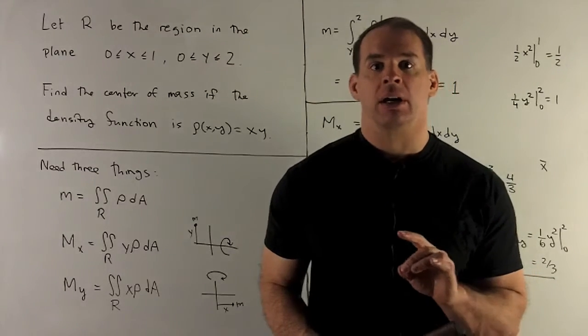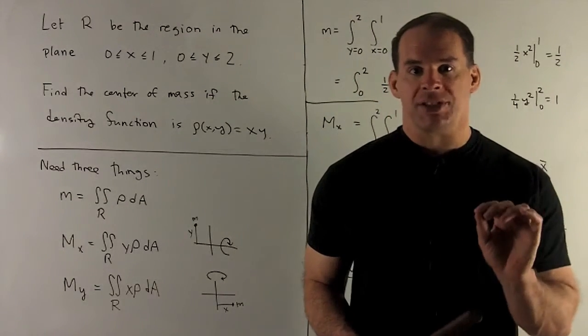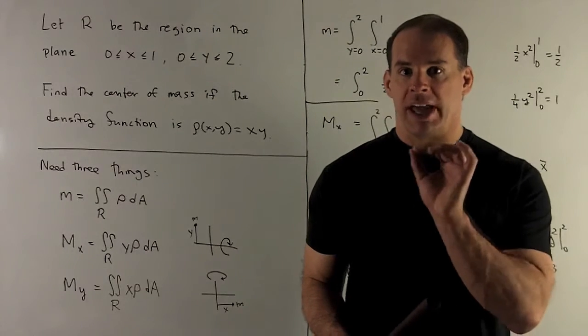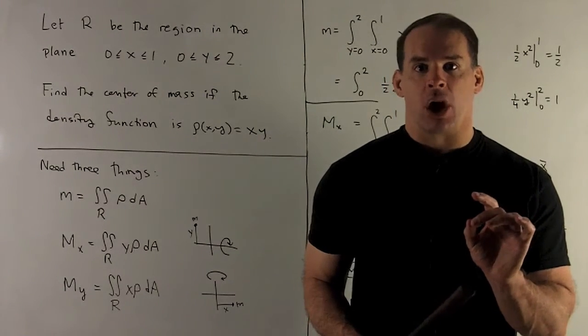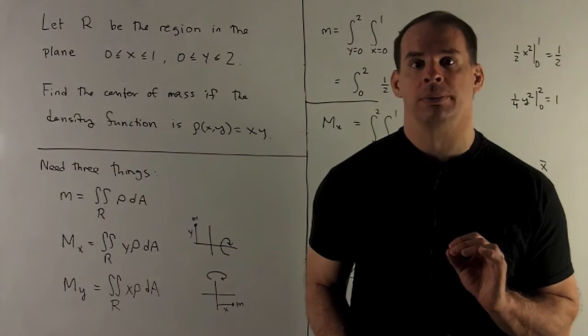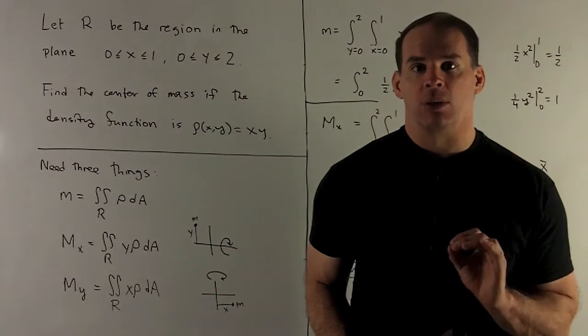Now, what's happening here? We don't have a uniform density. As we get further from the origin, we get more dense. So the idea is our center of mass is going to be skewed up towards one corner of the rectangle. That'll be our check when we're done.